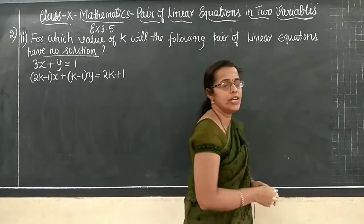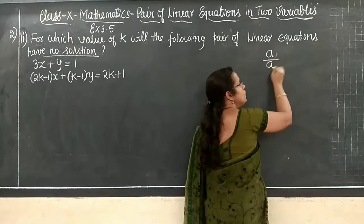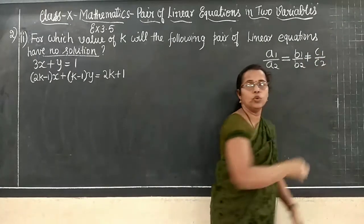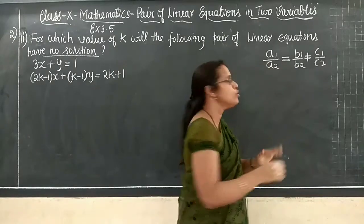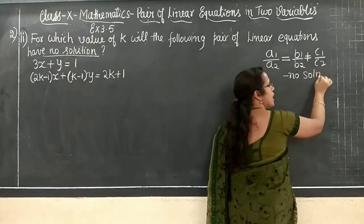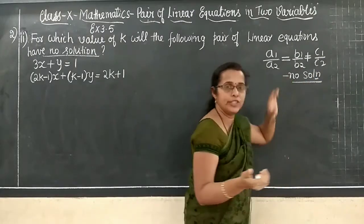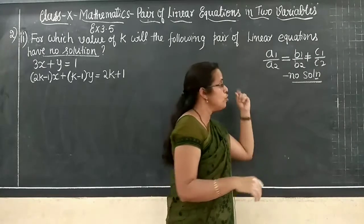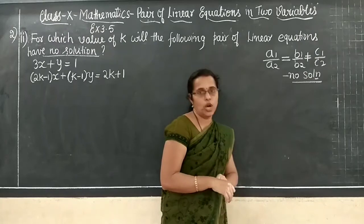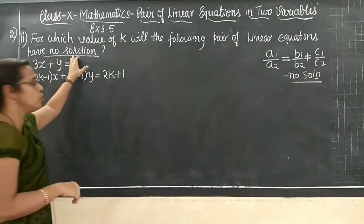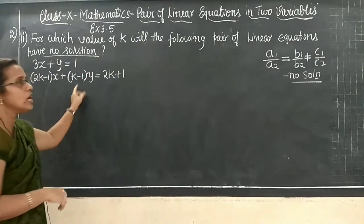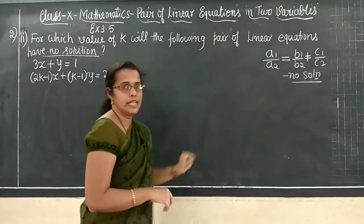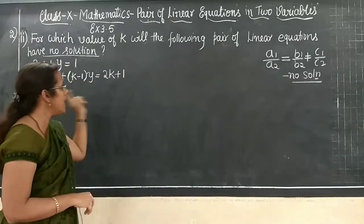What is the condition for parallel lines? As we have seen, A1/A2 = B1/B2 ≠ C1/C2. This is the condition for no solution. Whenever there is a specified condition, we have to write it in the form of ratios. For no solution, the condition A1/A2 = B1/B2 ≠ C1/C2 is what we use to find the value of K.